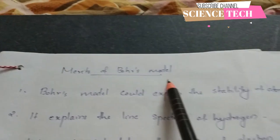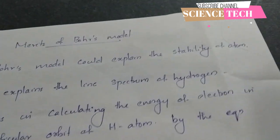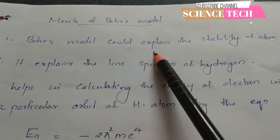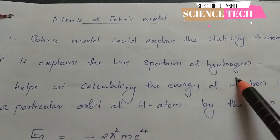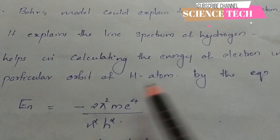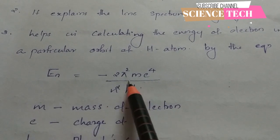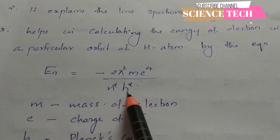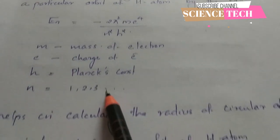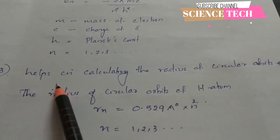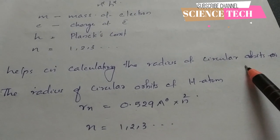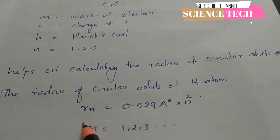The merits of the Bohr atom model include explaining the stability of the atom and the hydrogen line spectrum. Bohr also gave a formula for the radius of hydrogen orbits.